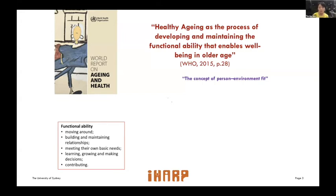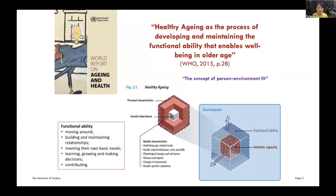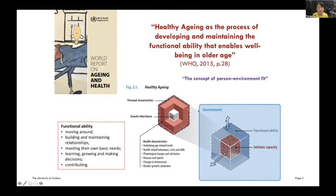This is my favorite figure from the WHO's report. It really highlights the importance of the person-environment fit when we talk about rehabilitation. The goal of rehabilitation is to help the person maintain independence. Functional ability is shown in darker blue, but what's inside is intrinsic capacity, which is made up of genetic inheritance, health characteristics, and personal characteristics. So dementia and other conditions could be part of these health characteristics. It's not just dementia that affects an individual's functional ability — it's all those factors plus the environment they are surrounded by. Rehabilitation really emphasizes the importance of a holistic approach.